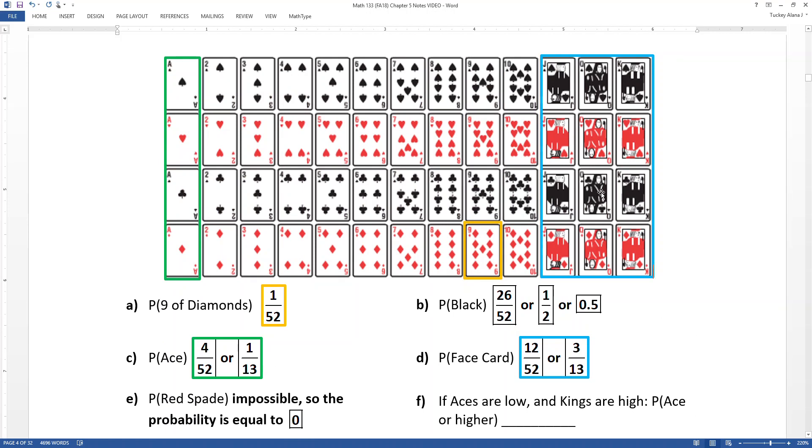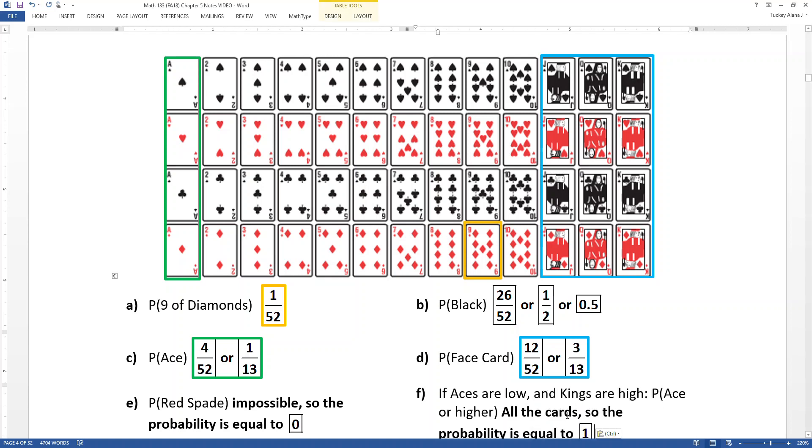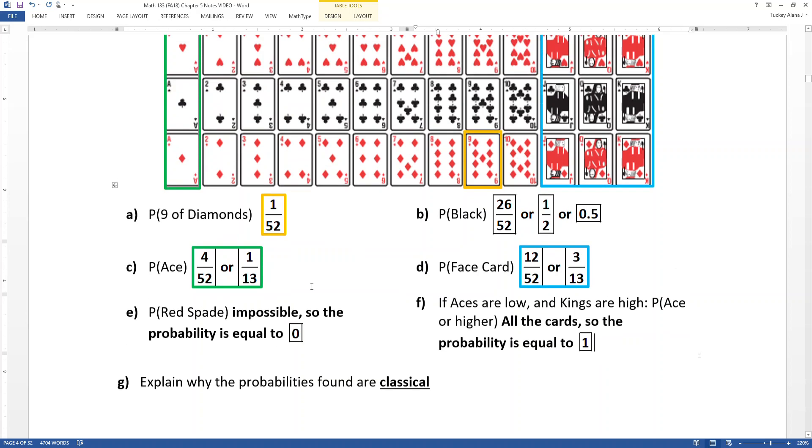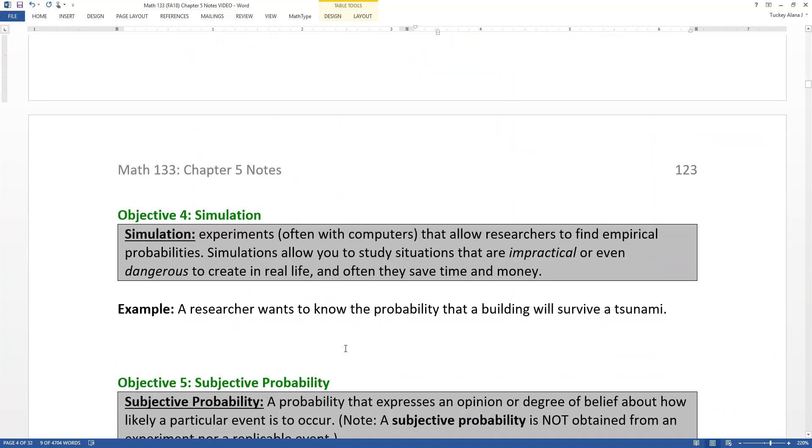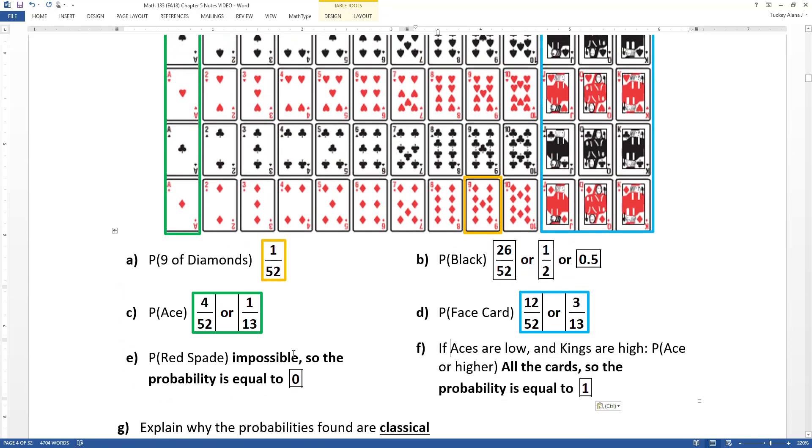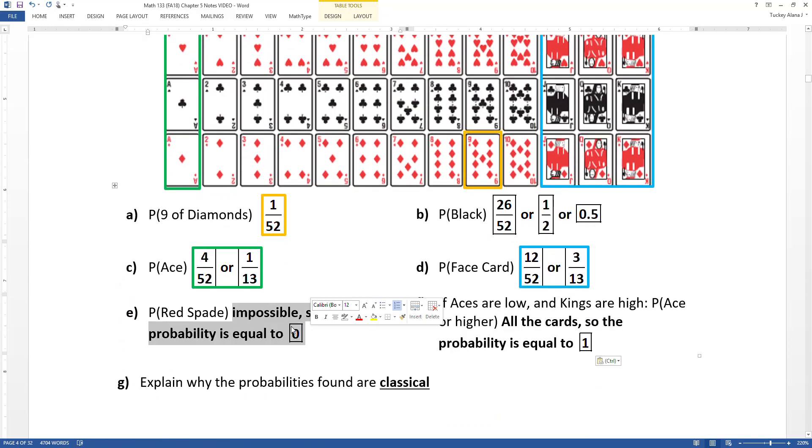Now if aces are low and kings are high, which is kind of how I've put this together here, then what's the chance of an ace or higher? Well, all of the cards are aces or higher. So the probability would be 100%. It would be one. 52 out of 52. So that's that one. Which has led us to a couple rules before I go any further. Impossible events have a probability of zero. Certain events have a probability of one. And that will come up, not in the next page, but the page afterwards. So just make a note of that a little bit in your head. So impossible events will be a probability of zero and certain events will be a probability of one.